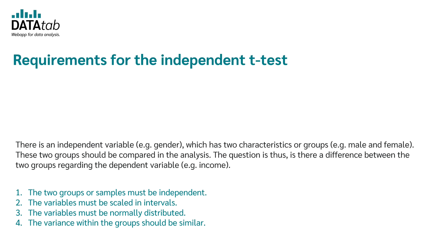Now let's look at the requirements. There is an independent variable — for example, gender — which has two characteristics or groups, for example male and female. You can only have two groups; you cannot calculate a t-test with three or more groups. The dependent variable — for example, income — is then compared across these two groups. There are four requirements: the two groups must be independent, the variables must be interval scaled, the variables must be normally distributed, and the variance within the groups should be similar.